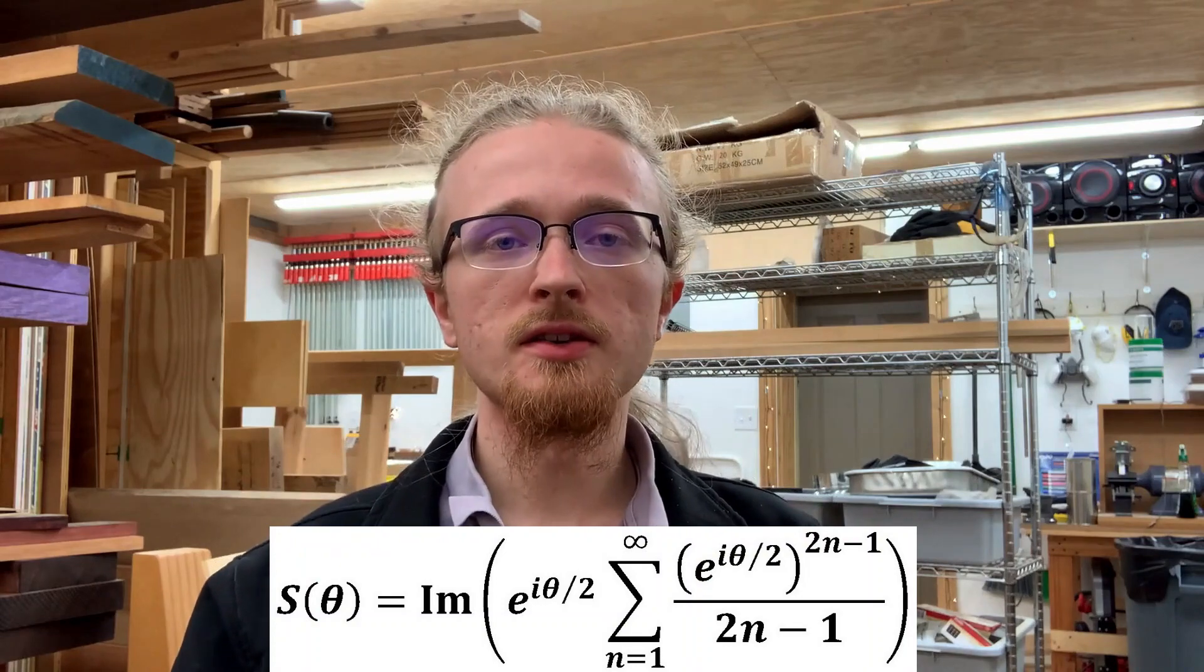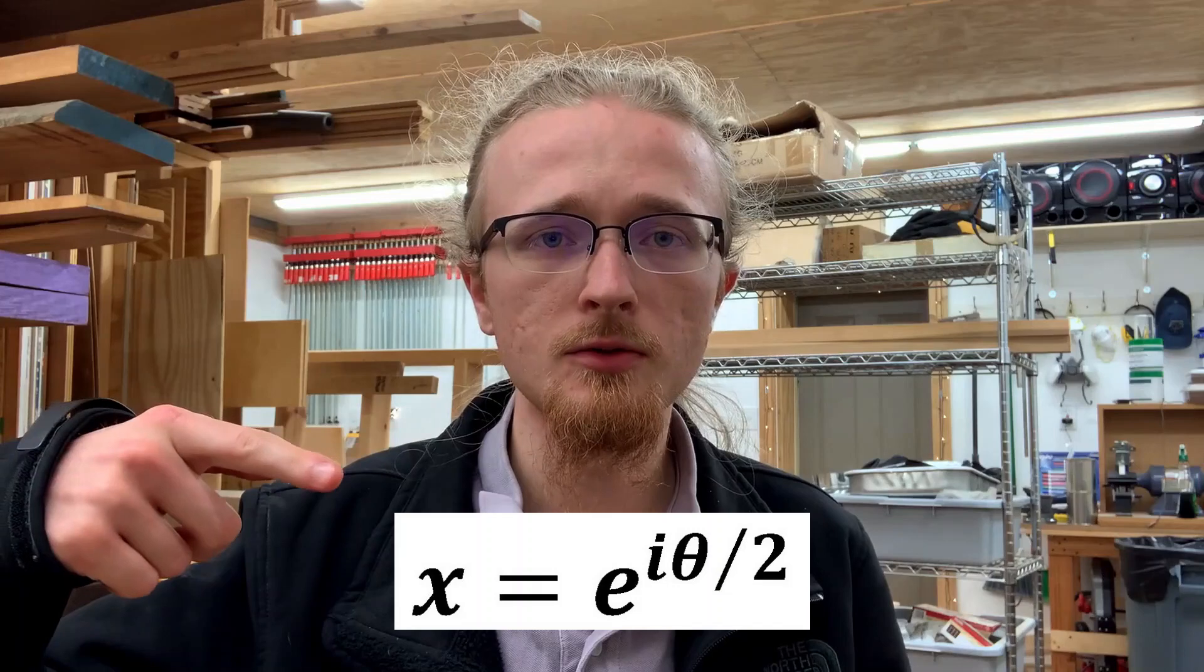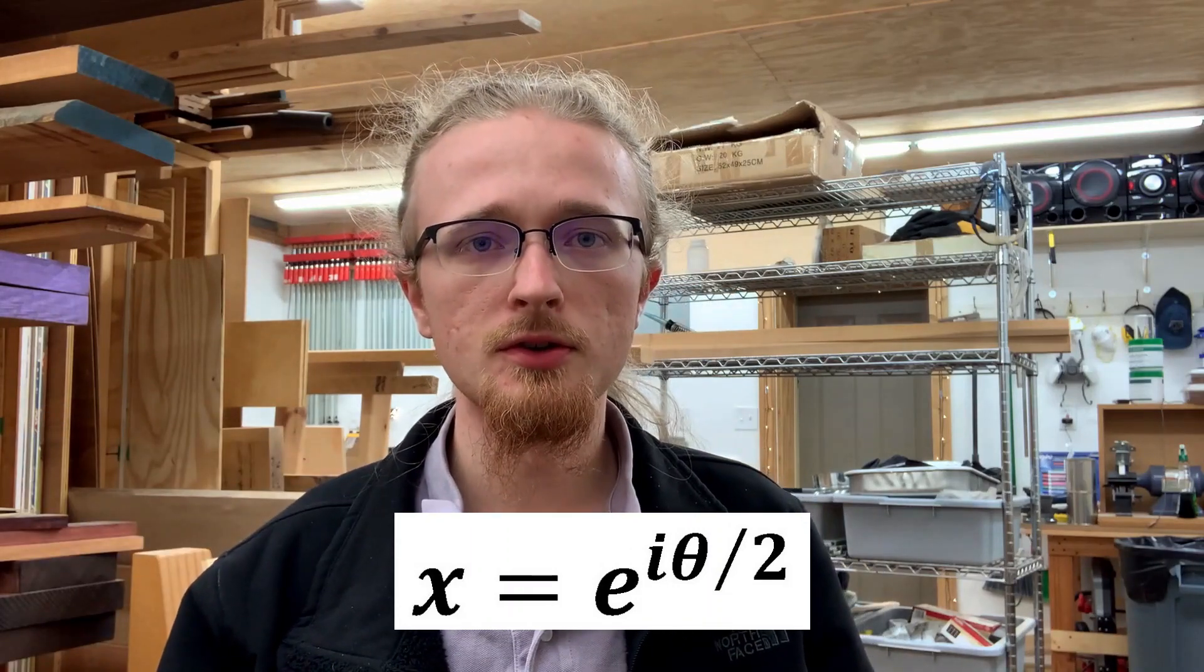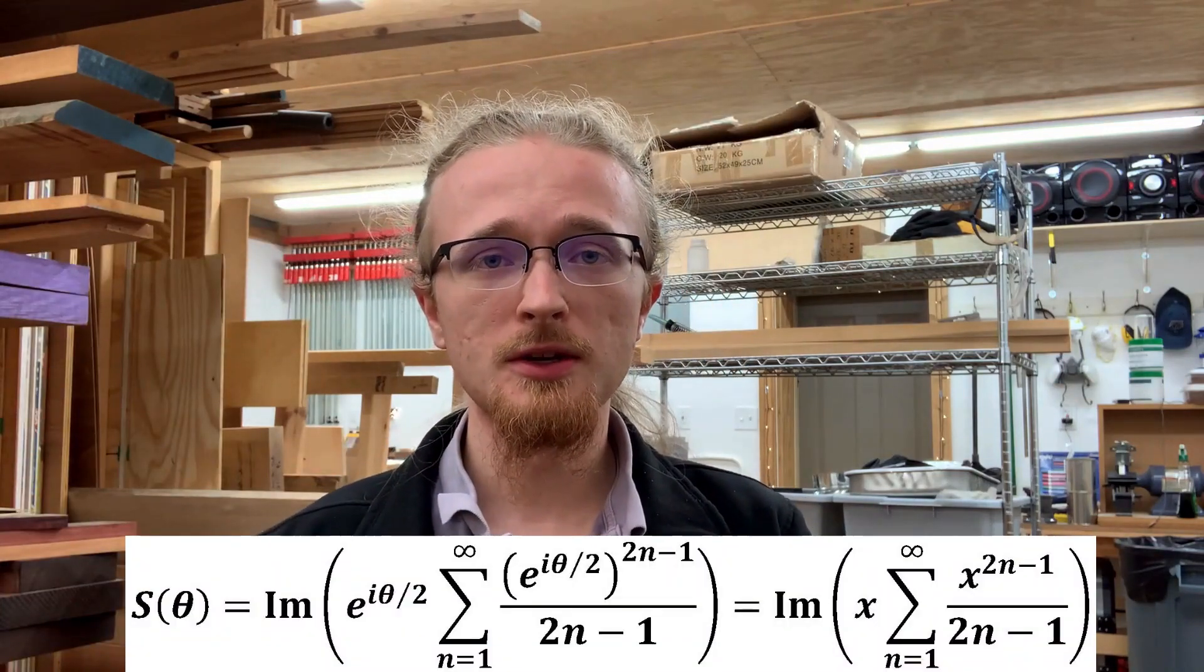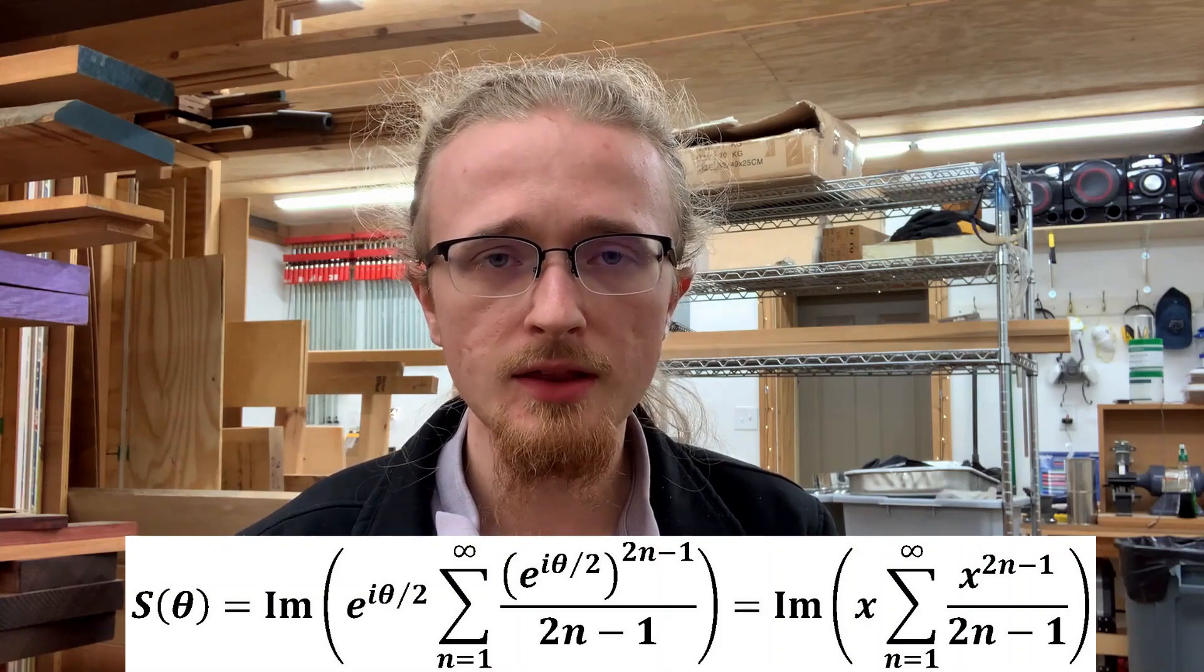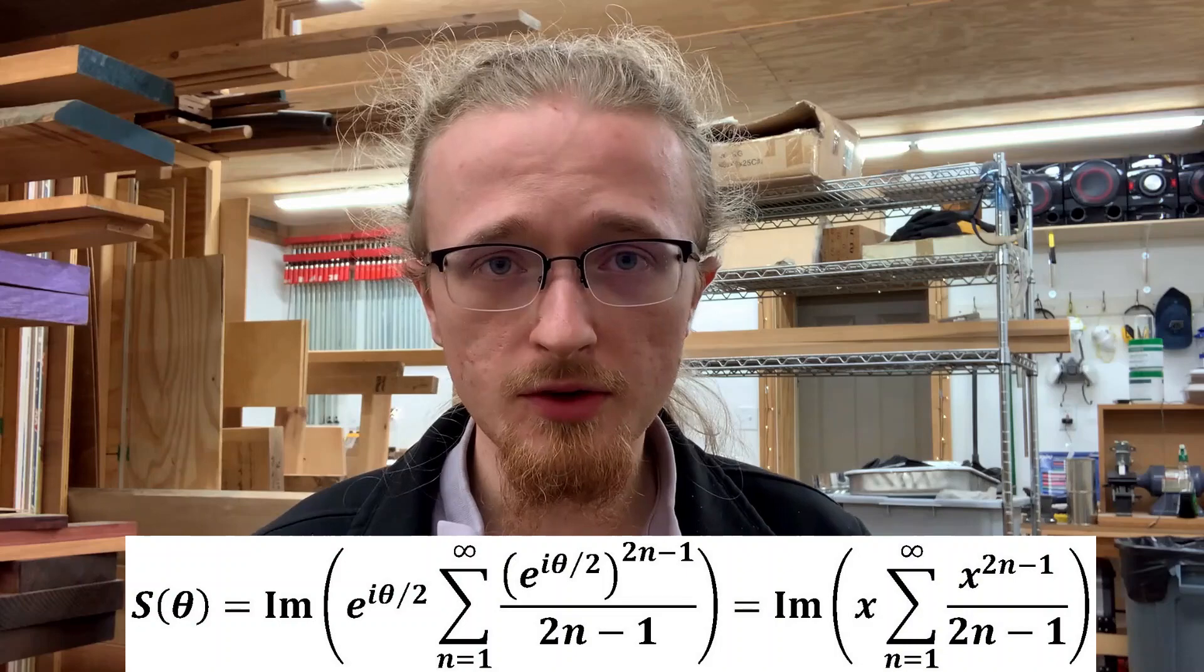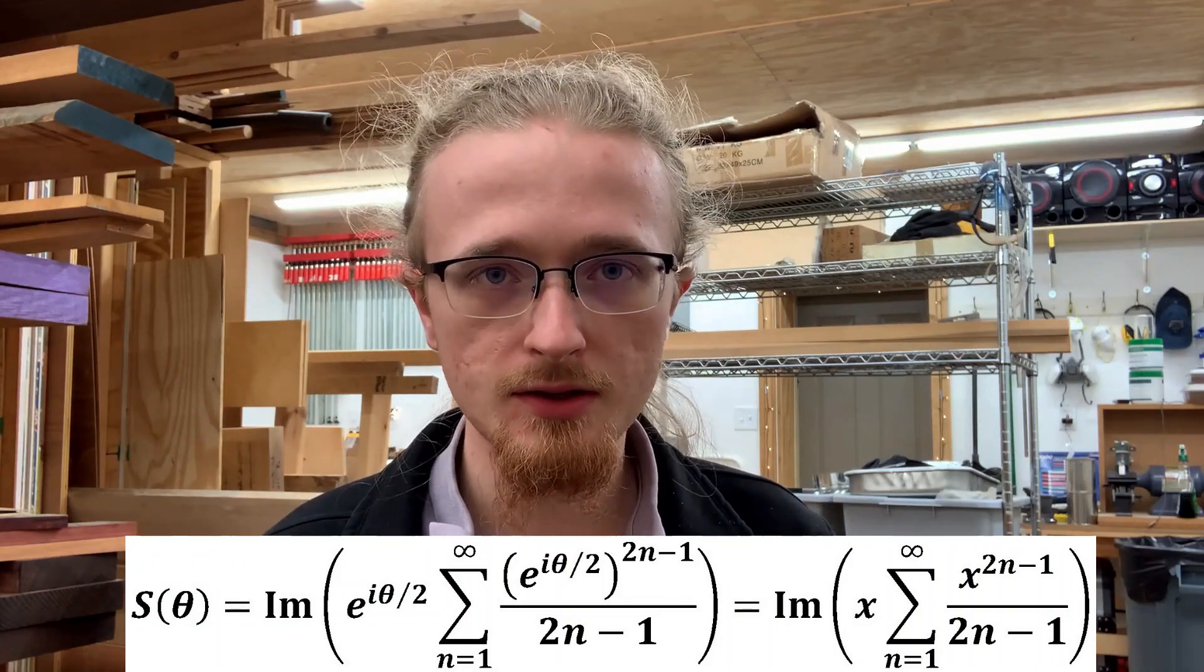To make that process easier, it's useful to define a new variable. Specifically, we're going to set x equal to e to the i theta over 2, making that substitution leaves our power series looking like this. And the reason why we're doing that is because we don't actually need to mess with the specific form of the e to the i theta over 2 variable until after we've completed the sum. So until that point, it's useful to just substitute x in to keep the notation cleaner.